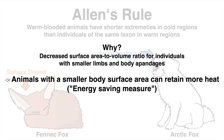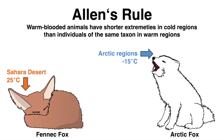As for Bergmann's rule, this phenomenon might have successfully evolved as an efficient energy-saving measure. To sum up, both rules — Bergmann's and Allen's rule — describe the phenomena of body adaptation to the corresponding environment in terms of a surface area to volume ratio that allows animals to emit or to save more heat.